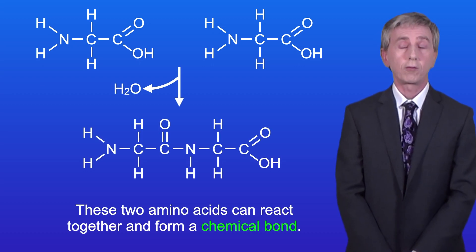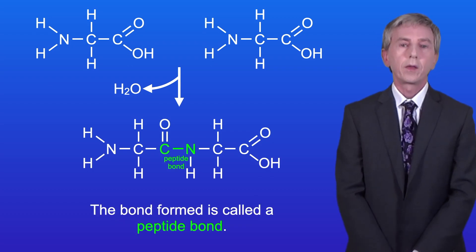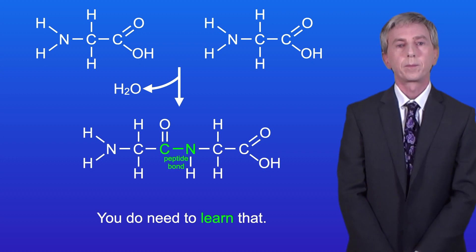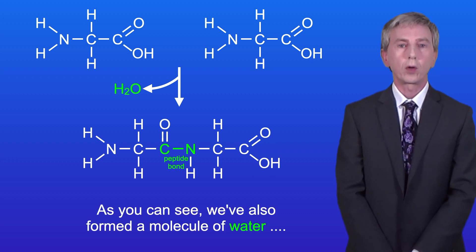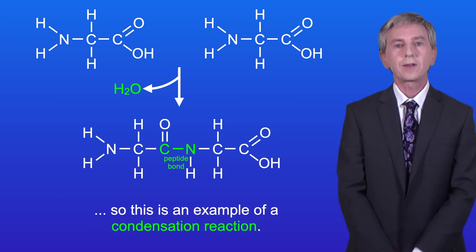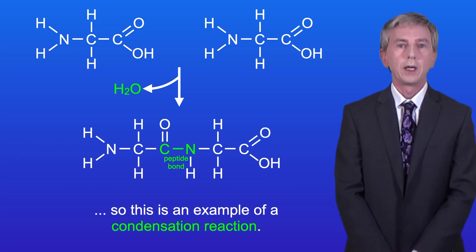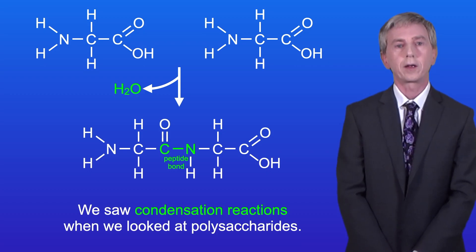Now these two amino acids can react together and form a chemical bond. The bond formed is called a peptide bond, and you do need to learn that. As you can see we've also formed a molecule of water, so this is an example of a condensation reaction, and we saw condensation reactions when we looked at polysaccharides.